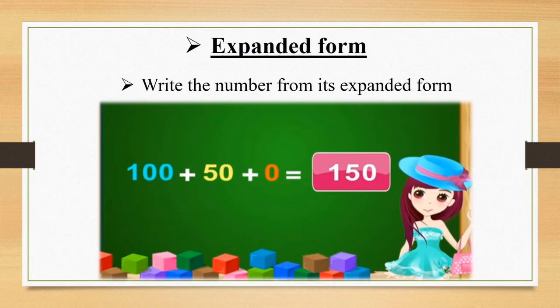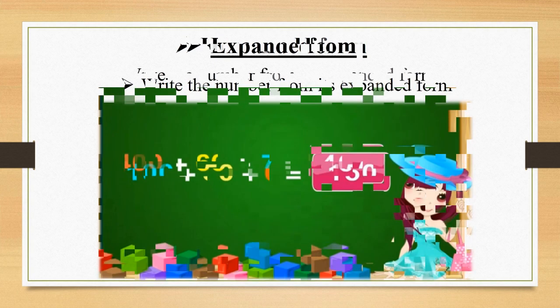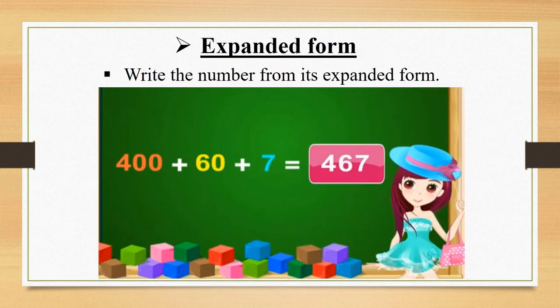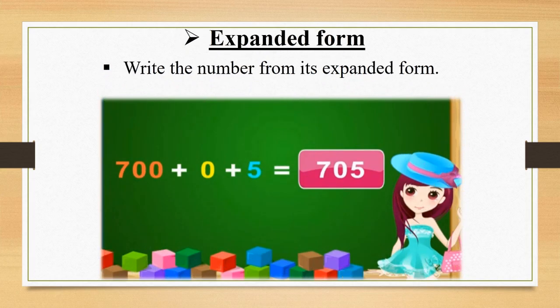Here is our first example of the number from its expanded form: 100 plus 50 plus 0 is equal to 150. Second example: 400 plus 60 plus 7 is equal to 467. Our last example: 700 plus 0 plus 5 is equal to 705.